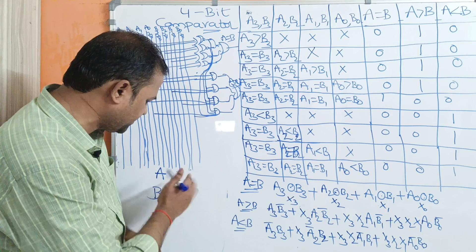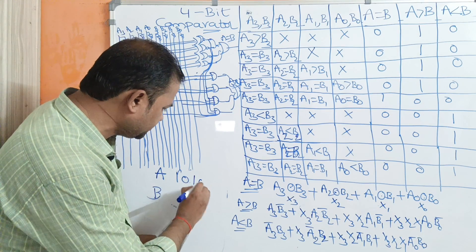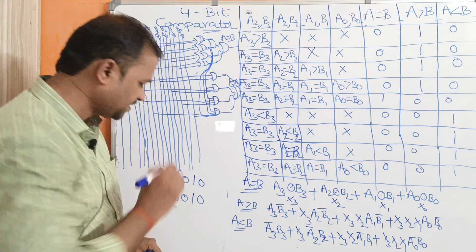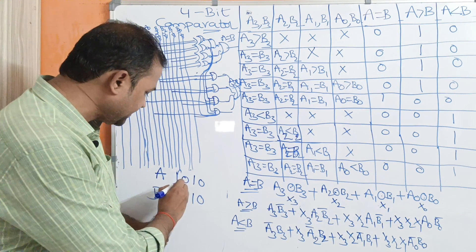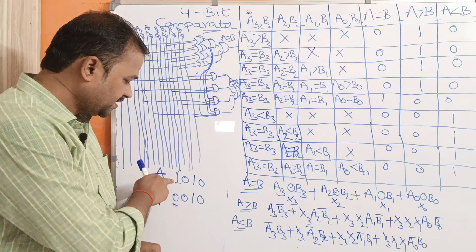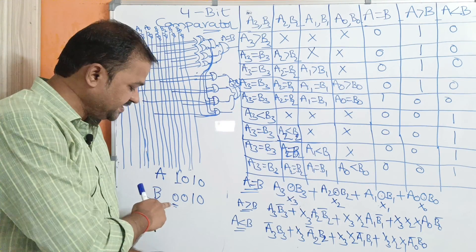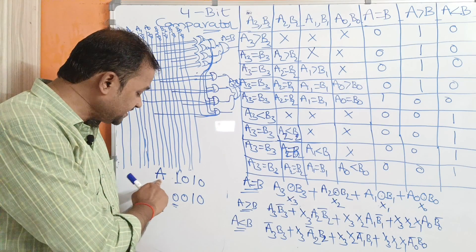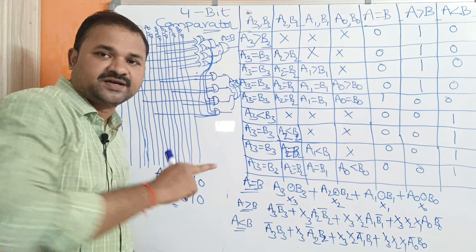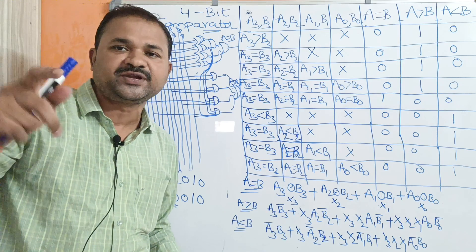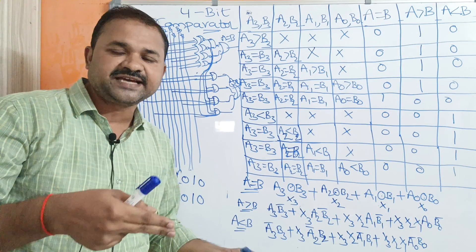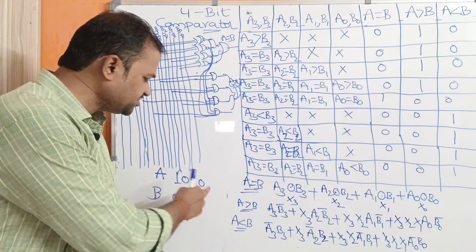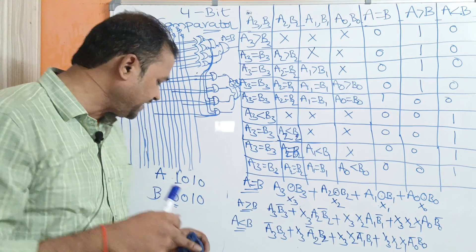Let us take an example. Let the first number be 1010 and the second number be 0010. First we compare A3 with B3. Here A3 value is 1 and B3 value is 0. Since 1 is greater than 0, we can say that A is the biggest number. So the A greater than B output is 1, whereas A less than B and A equal to B outputs are 0.